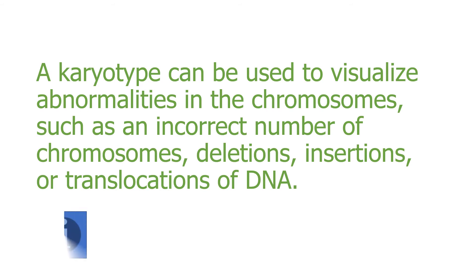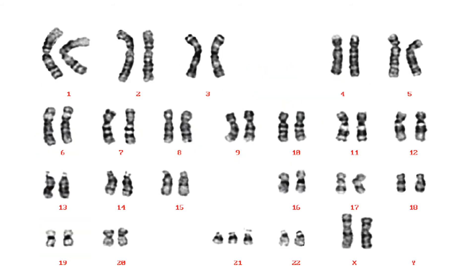Now, let us have a look at the karyotype. Here we have the 22 pairs of autosomes and one pair of sex chromosomes. We can easily see that both the sex chromosomes are similar, so it is a female. If one is big and another is small, it indicates that it is a male. The Y chromosome is generally smaller, while homologous chromosomes are similar in size and shape.